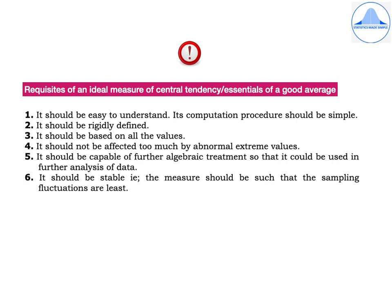Sixth property is it should be stable, that is the measure should be such that sampling fluctuations are least. That means the value of an average which is calculated from various independent random samples of same size from a population should not vary much from each other.